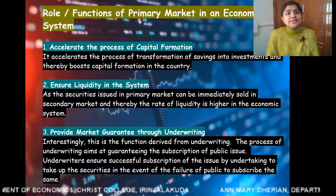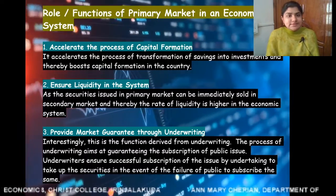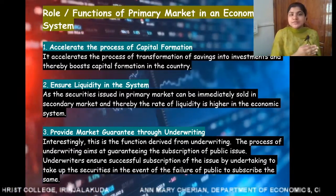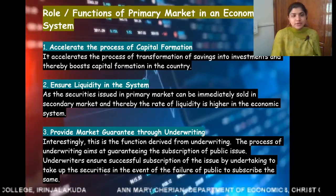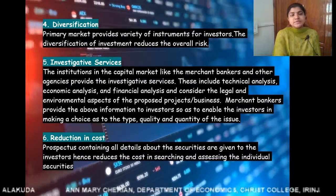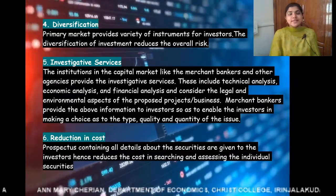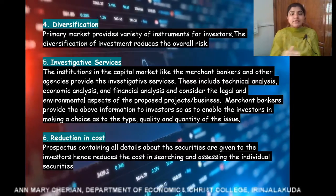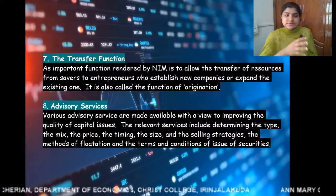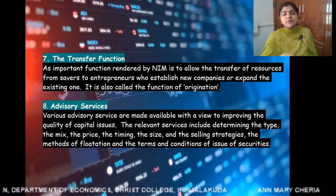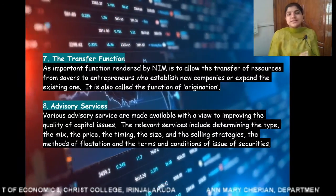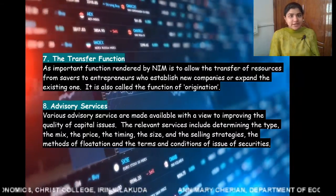To summarize, the primary market has eight important functions in an economic system: first, it accelerates the process of capital formation by transforming savings into investment; second, it ensures liquidity in the system; third, it provides market guarantee through underwriting; fourth, it helps in diversification of investment and reduces overall risk; fifth, it provides investigative services to investors; sixth, it reduces search and assessment costs; seventh, it transfers resources from savers to entrepreneurs; and eighth, it provides advisory services to issuer companies. I hope this is clear. Thank you.